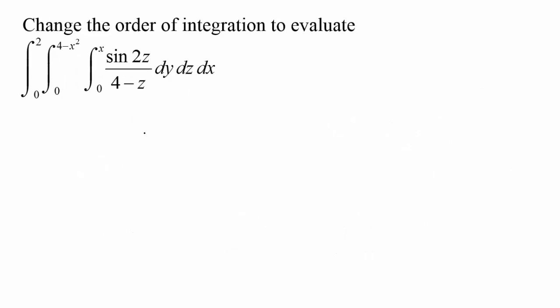Here's another example where we need to change the order of integration. As it is, it's going to be a problem: we integrate with respect to y first — that'll be easy — but then at the next step we'd have to integrate with respect to z, and we have sine(2z) over (4 minus z), with nothing to help us. So we're hoping that if we delay the z integral, something will happen to make the z integral doable.